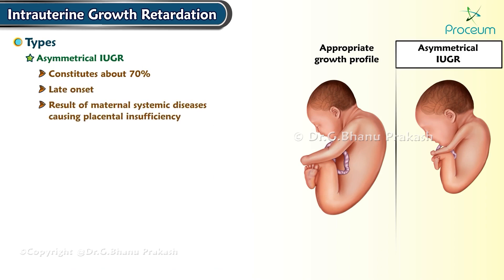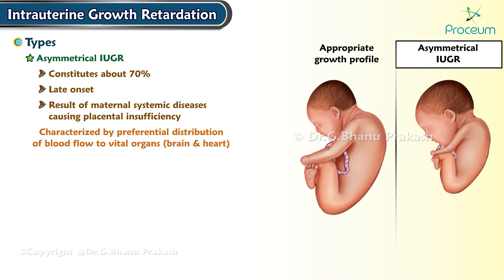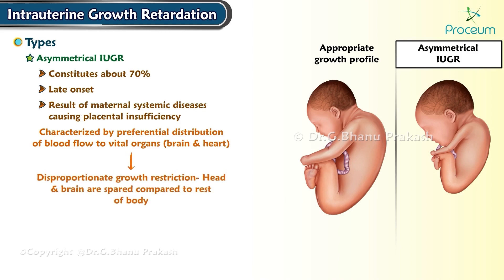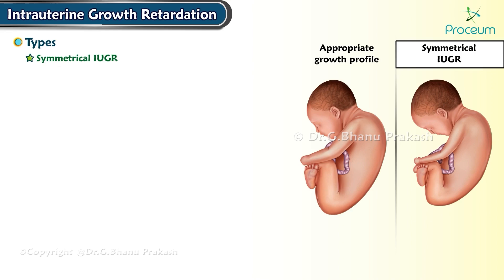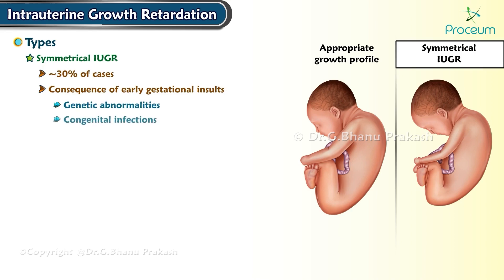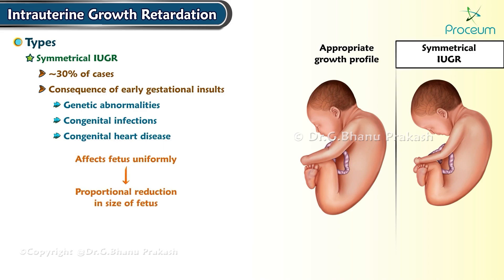Asymmetrical intrauterine growth restriction is typically a late onset condition, often the result of maternal systemic diseases causing placental insufficiency. It is characterized by preferential distribution of blood flow to vital organs like the brain and heart, leading to disproportionate growth restriction where the head and brain are spared compared to the rest of the body. Symmetrical intrauterine growth restriction makes up about 30 percent of cases, resulting from early gestational insults such as genetic abnormalities, congenital infections, or congenital heart disease, affecting the fetus uniformly with a proportional reduction in size.